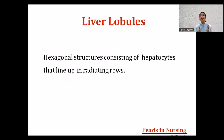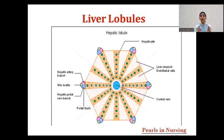The next important structure is the liver lobule. We've talked about lobes and segments — now the lobule is the hexagonal structure that contains hepatocytes arranged in rows. Looking at the picture, we can see the structure of one lobule: at the center there is a central vein, and surrounding it are rows of hepatocytes. The liver has many such lobules that carry out its functions.